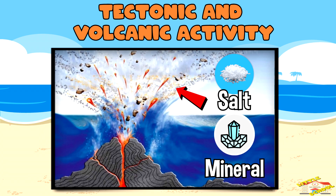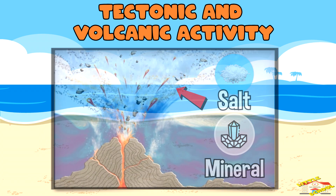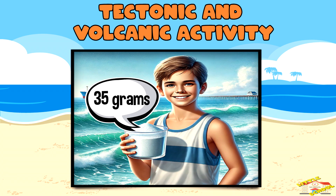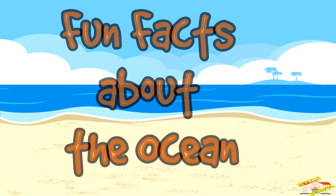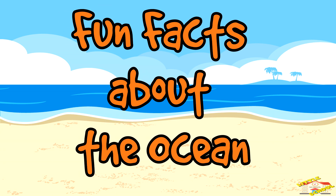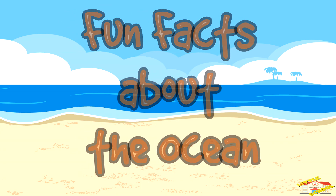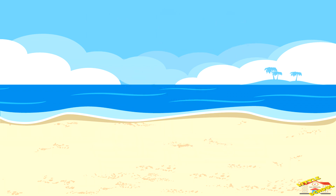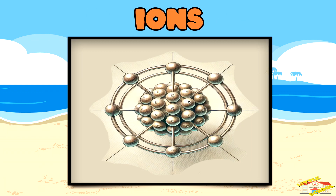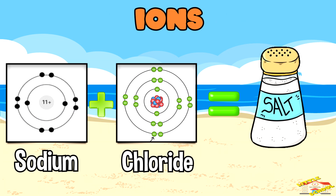Tectonic and volcanic activity: underwater volcanic eruptions and hydrothermal vents also release minerals and salts into the ocean, adding to its salinity. Seawater has an average salinity of 35 grams of salt per liter. Now here are some fun facts about the ocean!